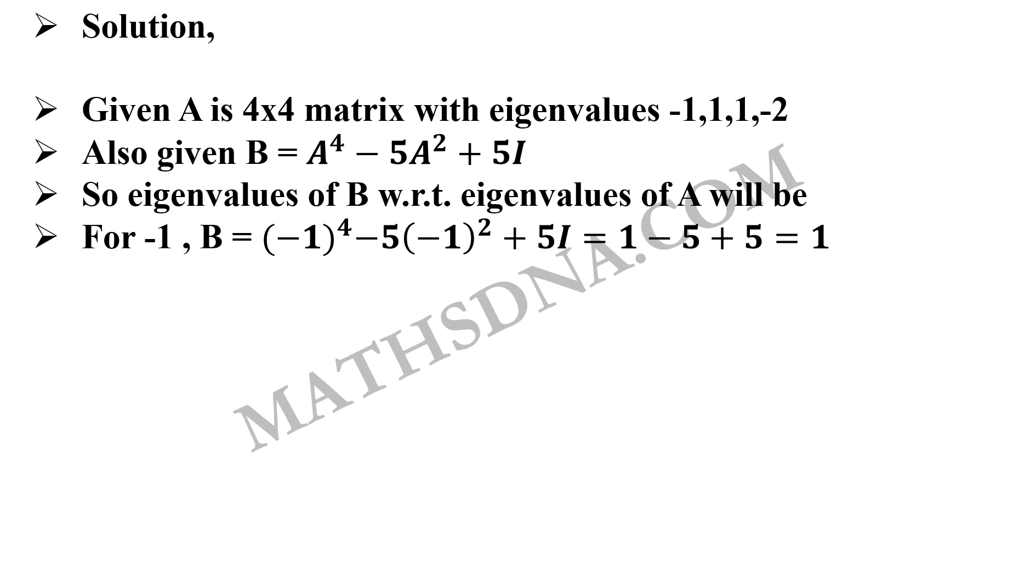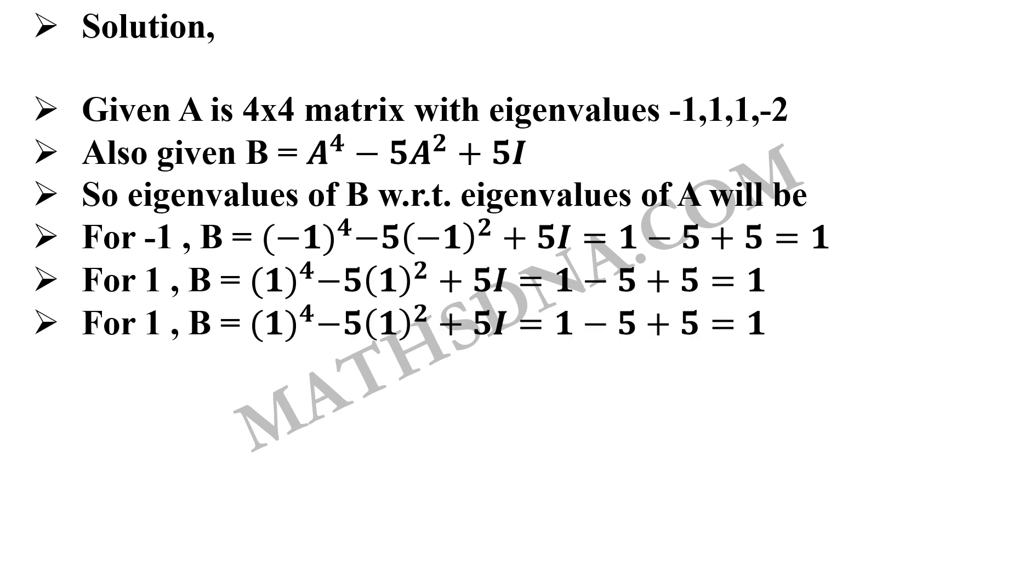So for eigenvalue -1, the eigenvalue of B will be (-1)^4 - 5(-1)^2 + 5 = 1 - 5 + 5 = 1. We are using the Cayley-Hamilton theorem here. Similarly, for eigenvalues 1, 1, and -2, all four eigenvalues of matrix B equal 1.